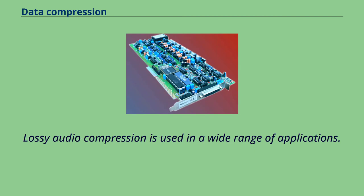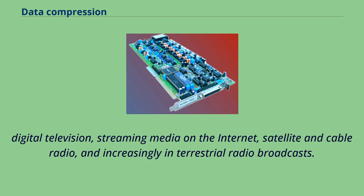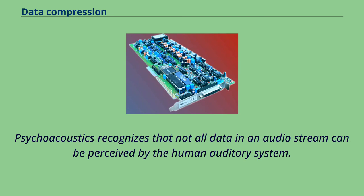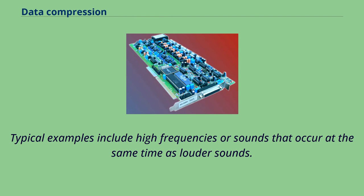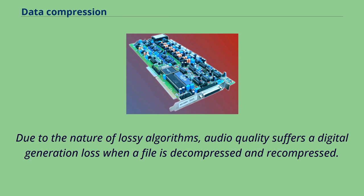Lossy audio compression is used in a wide range of applications. In addition to standalone audio file playback in MP3 players or computers, digitally compressed audio streams are used in most video DVDs, digital television, streaming media on the internet, satellite and cable radio, and increasingly in terrestrial radio broadcasts. Lossy compression typically achieves far greater compression than lossless compression by discarding less critical data based on psychoacoustic optimizations. Psychoacoustics recognizes that not all data in an audio stream can be perceived by the human auditory system. Most lossy compression reduces redundancy by first identifying perceptually irrelevant sounds — sounds that are very hard to hear, such as high frequencies or sounds that occur at the same time as louder sounds. Those irrelevant sounds are coded with decreased accuracy or not at all. Due to the nature of lossy algorithms, audio quality suffers a digital generation loss when a file is decompressed and recompressed.